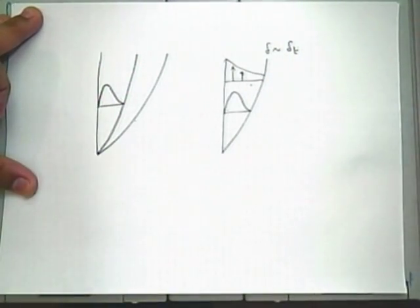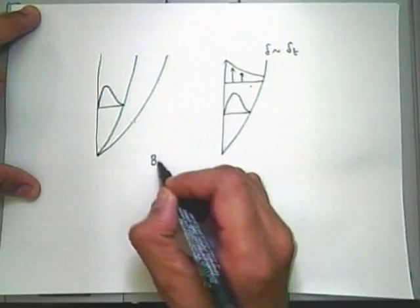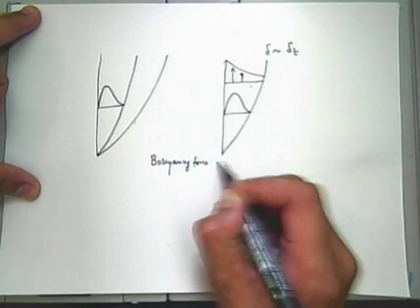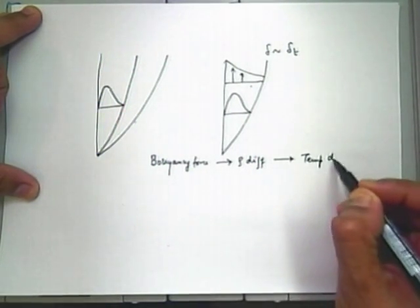Buoyant force is active wherever there is a density difference, and density difference is created because of the temperature. So wherever there is temperature difference there will be buoyant force active. The boundary layer thickness only suggests that both are of similar size when drawn equal. They can be different as long as the Prandtl number is different. The same theory valid here is also valid for natural convection — Prandtl number will appear in the non-dimensionalized governing equations for natural convection over a vertical plate.